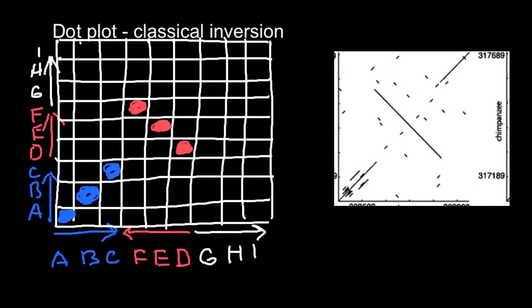And next we have to plot G, and we plot it in this cell. H in this cell and I in this cell. So this is exactly what we see on this picture, and this is classical inversion.